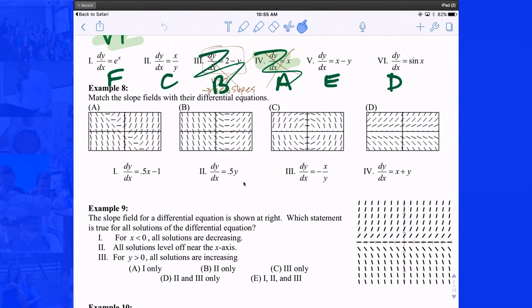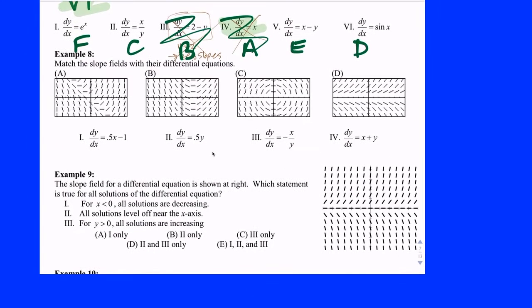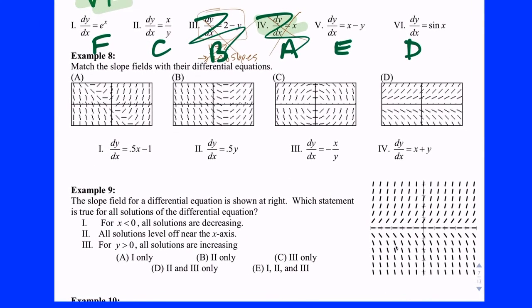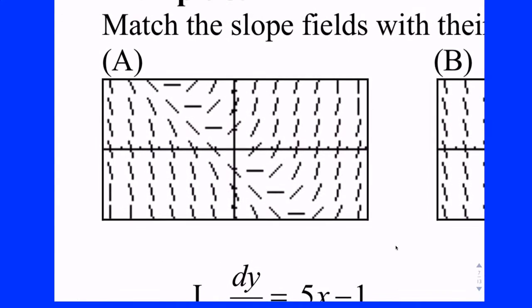Example 8 is very much like example 7 where you're matching the slope field with the actual differential equation that created it. Let's do part A starting with the graph and going to the equation, because it could be asked either way. If you see a graph like this — maybe a multiple choice question with five equations as answer choices — what you want to look for first is where there are zero slopes. Notice there are zero slopes all the way down what appears to be the line y equals negative x.